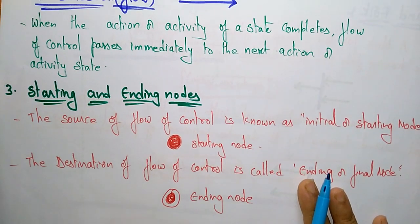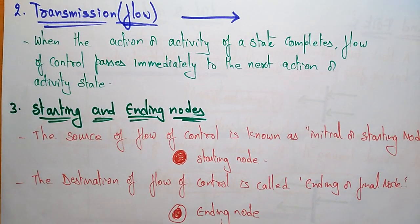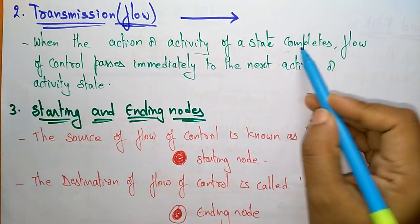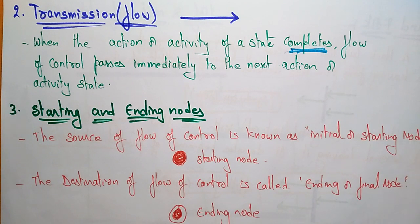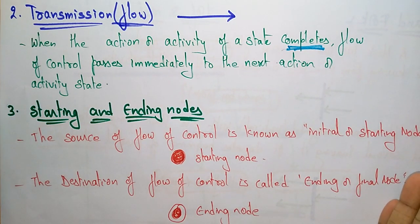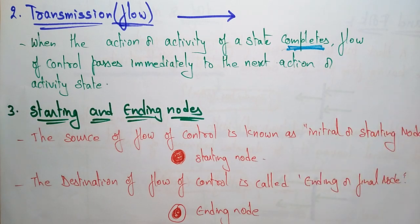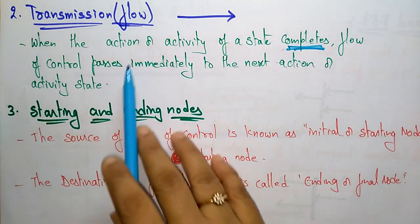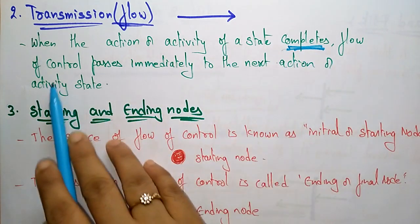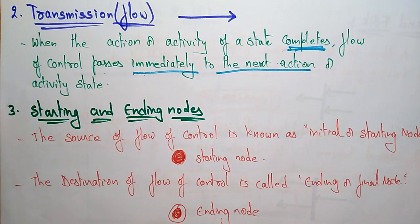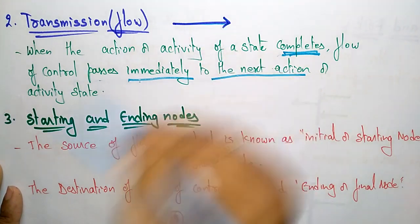The next notation in the activity diagram is transmission — that is, a flow from one activity to another activity. When the action or activity of a state completes, the flow of control passes immediately to the next action or activity state. This is represented by an arrow symbol for the transmission flow.